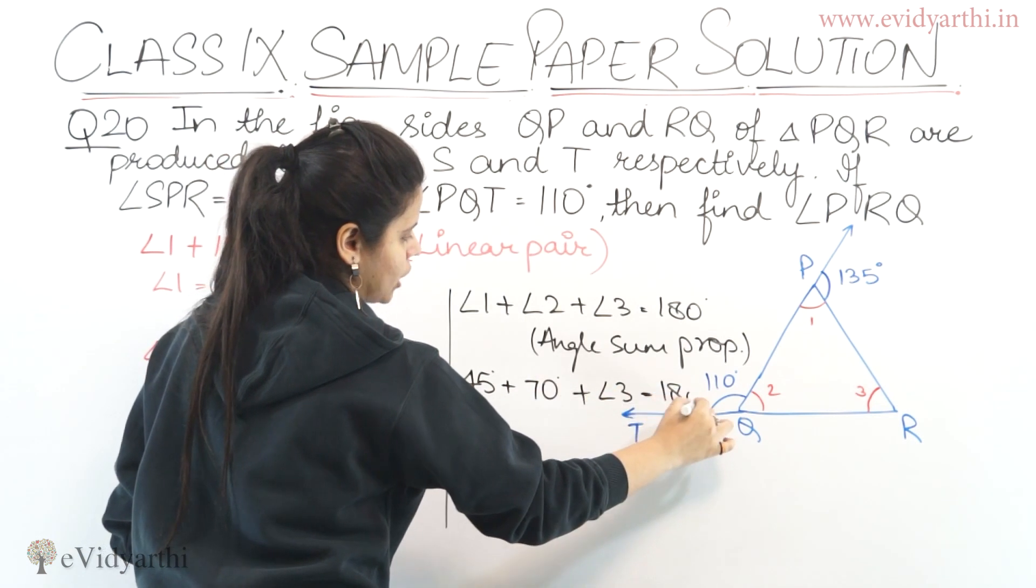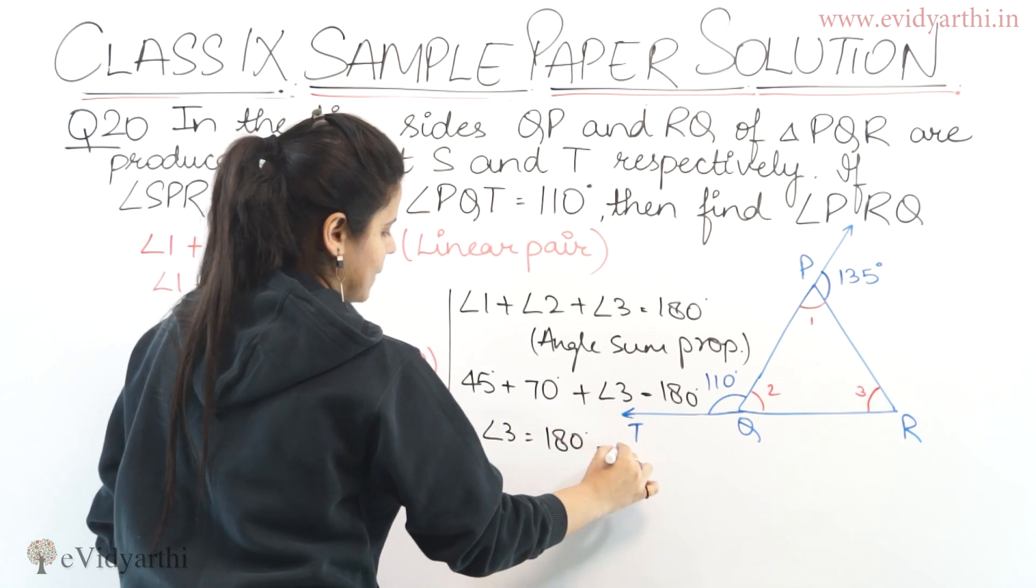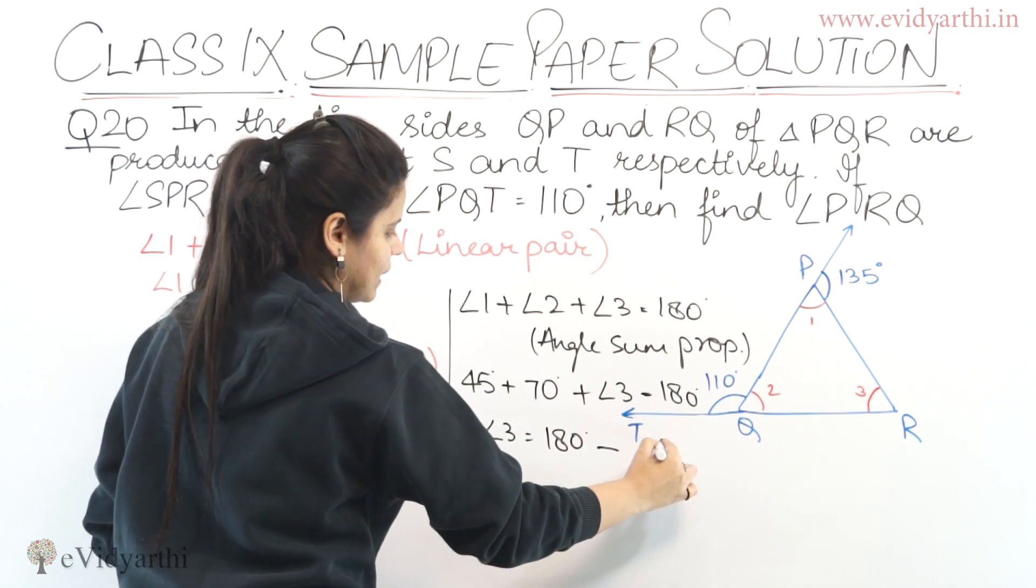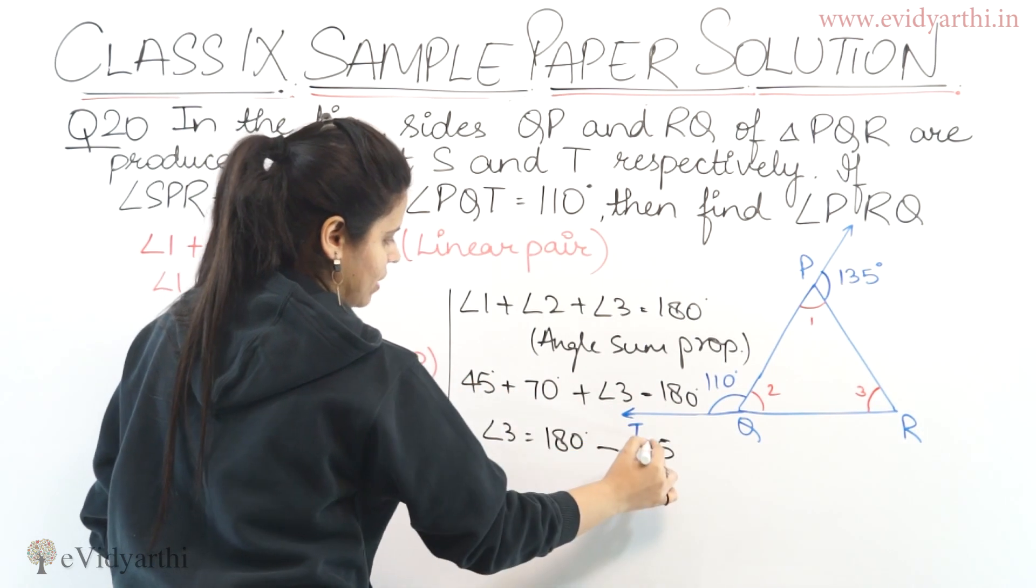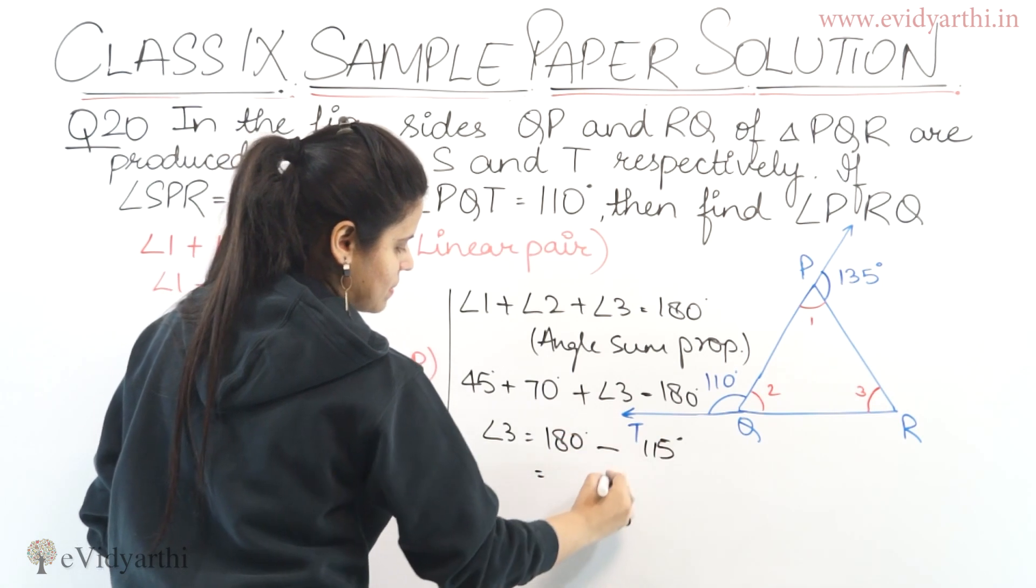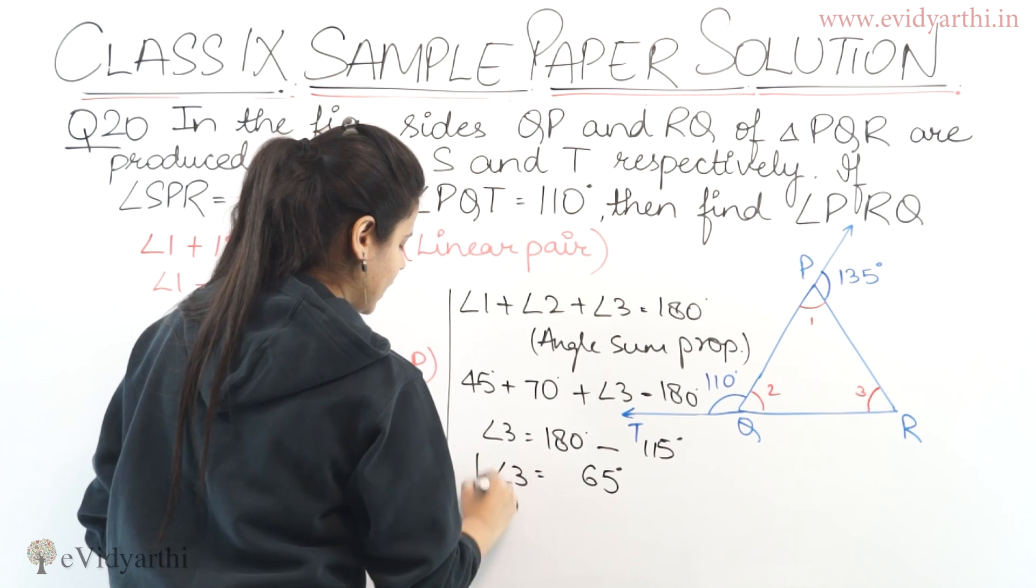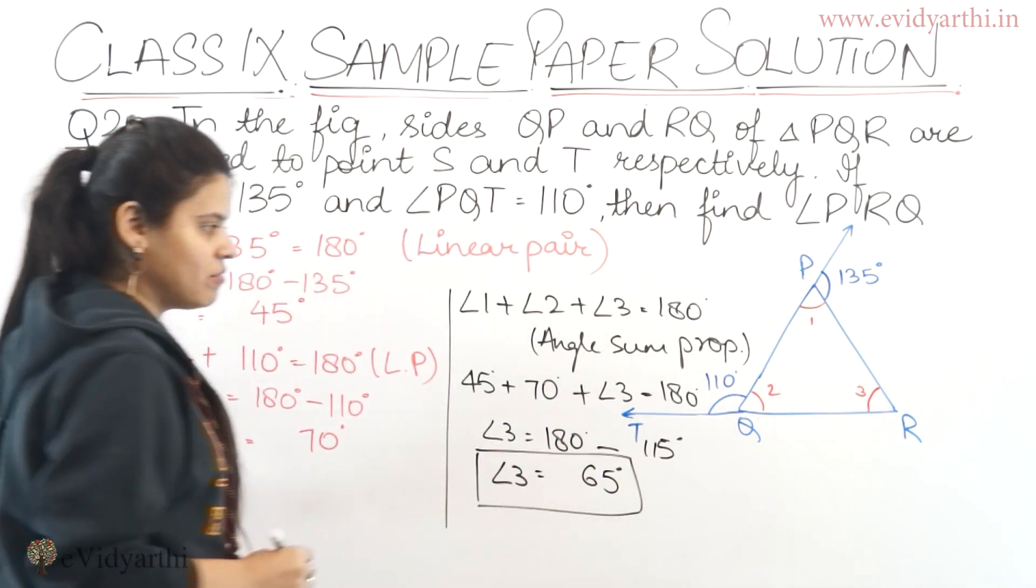Angle 1 we found is 45 degrees plus angle 2 we found is 70 degrees plus angle 3. So this will be 180 minus these two, which is 115. Now subtracting, we get angle 3 equals 65 degrees.